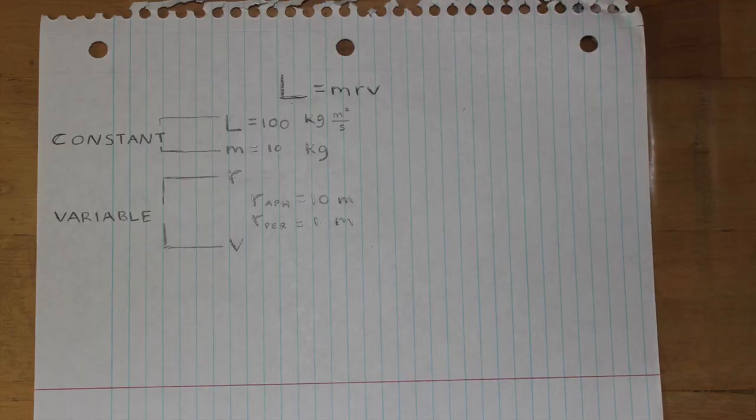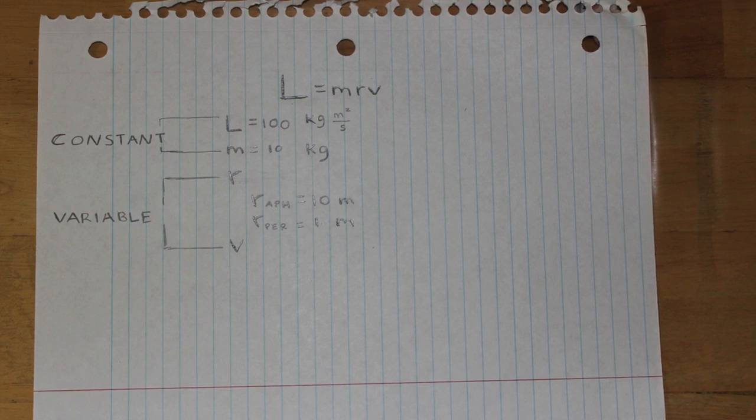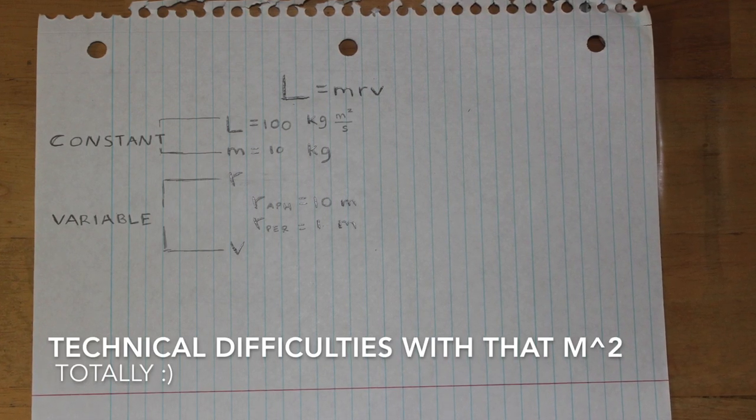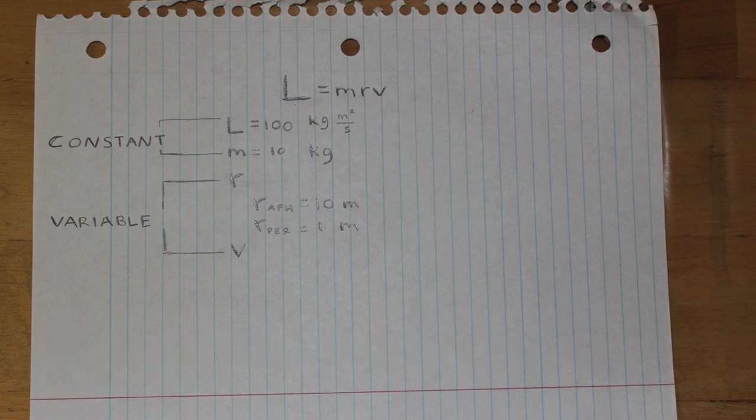To help explain this concept better, allow me to assign some totally random, totally inaccurate, but okay for our purposes of understanding this concept and its greater significance to the universe, you know, some values to these variables. Let's say that L is equal to 100 kg m² per second, which stays the same the whole time. Remember, it's the angular momentum. It's conserved.